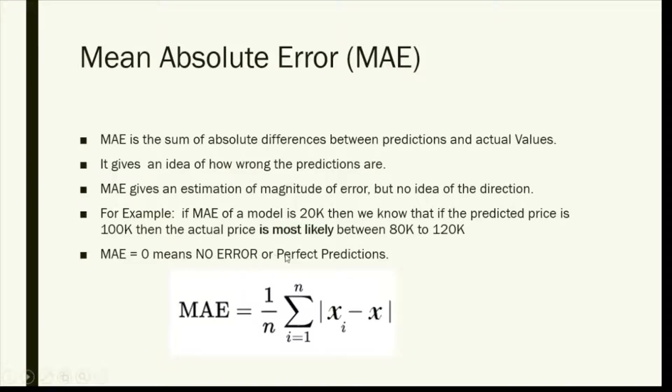If it is zero, that means there's no error, or my algorithm has made perfect predictions. This is the formula: the total amount of observations, and the absolute is given by this mod. This is the predicted and the actual value. When you subtract it and you take the mean of it.